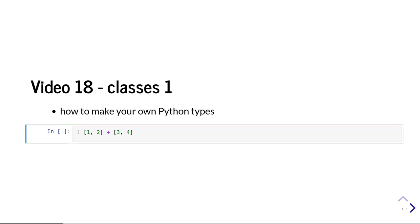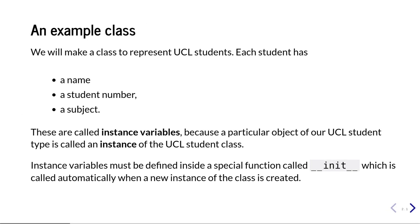For now, let's do our first example of creating a new Python type. We're going to create a class to represent UCL students. The data about a UCL student which we want to capture is their name, their student number, and the subject which they study. These variables will be called instance variables.